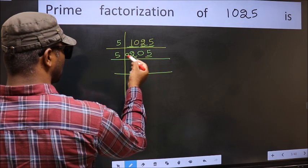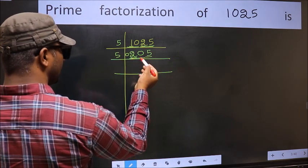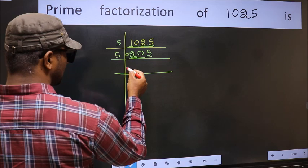First number 2, smaller than 5, so take 2 numbers 20. Whenever you are taking 2 numbers, compulsory put 0.